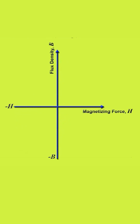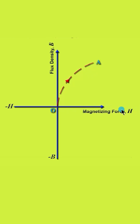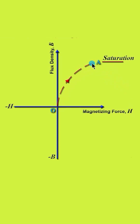When we pass current through the coil, a magnetizing force will be developed. As the magnetizing force increases, the flux density also increases along the curve OA. When magnetizing force H is increased further, we might expect the flux density to keep increasing — but that is not the case. At point A, saturation occurs and the value of flux density remains the same.